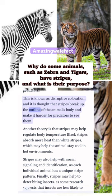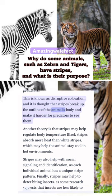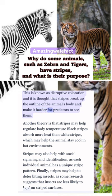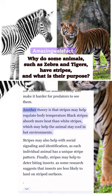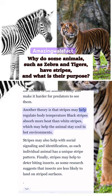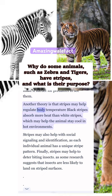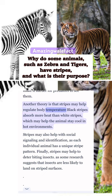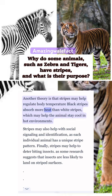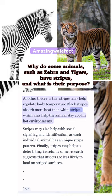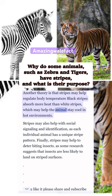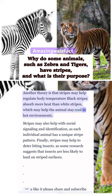It is thought that stripes break up the outline of the animal's body and make it harder for predators to see them. Another theory is that stripes may help regulate body temperature, as black stripes absorb more heat than white stripes.